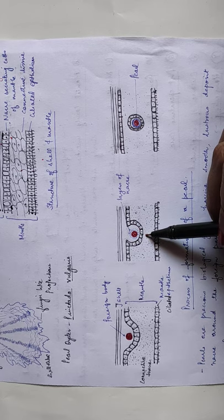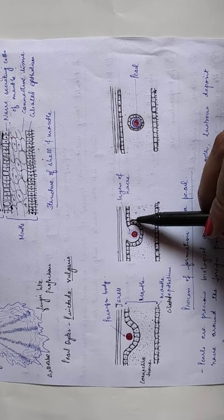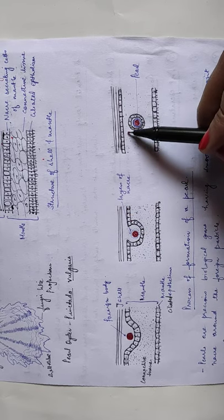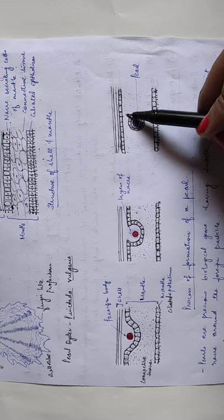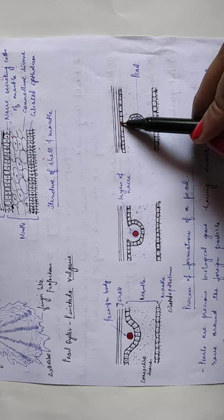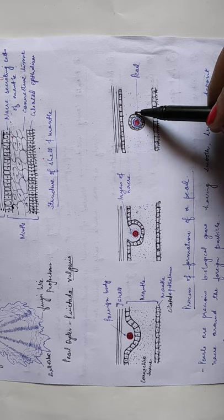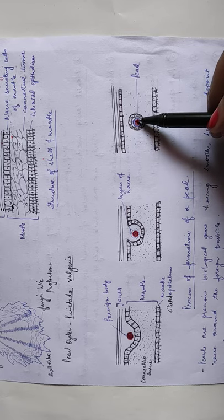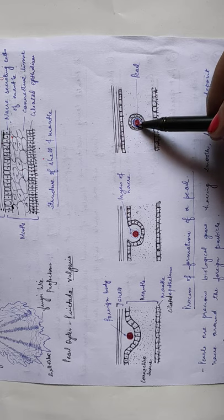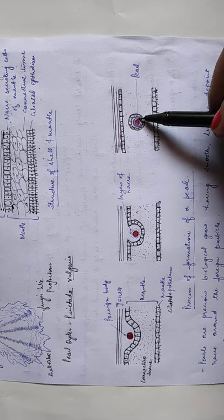These layers are secreted until the irritation in the organism persists. Later on, the mantle epithelium forms a sac and gets separated from the mantle epithelium. And this foreign particle with the nacre secretions around it forms the pearl.